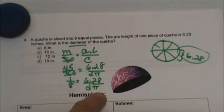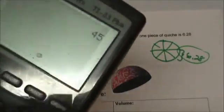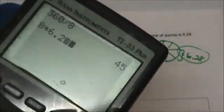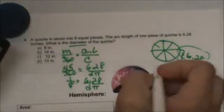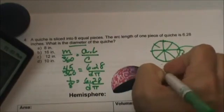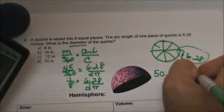So from here when you have proportions we do cross products. We are going to cross multiply 8 times 6.28, so 8 times 6.28 that gives us 50.24. I'll just go over here, 50.24 is equal to d pi times 1 or just d pi.